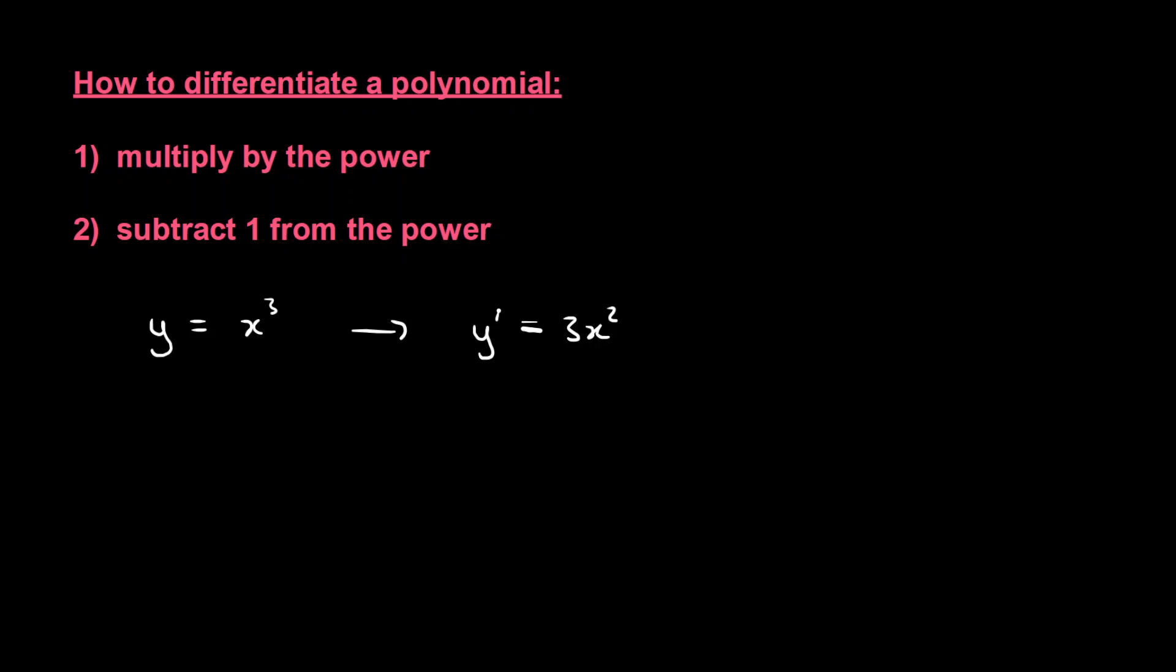Well now let's say we wanted to reverse this process. In other words, let's say that we started with y prime equals 3x squared, could we undo that to find out what y is?